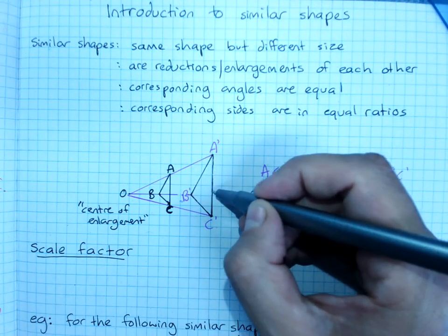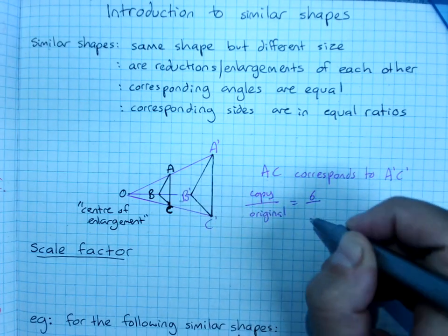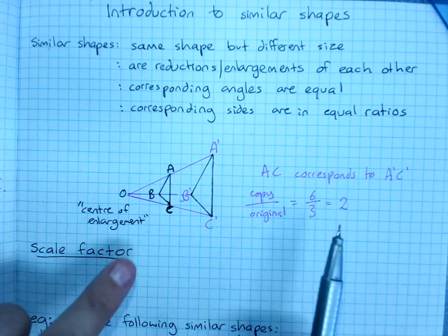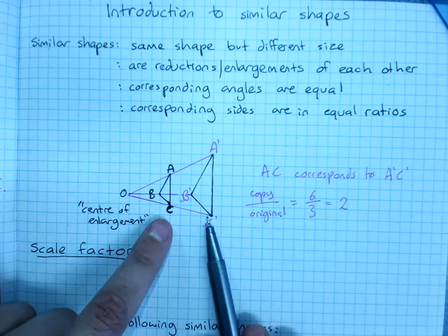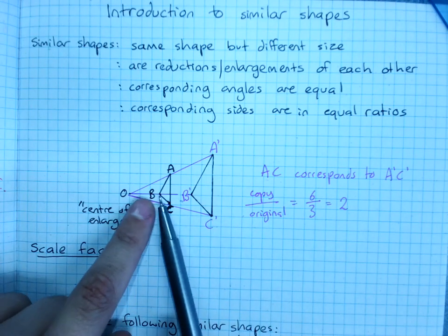This is one, two, three, four, five, six grid squares over one, two, three. That's two. Every pair of sides, when I do the copy divided by the original, will give me two.